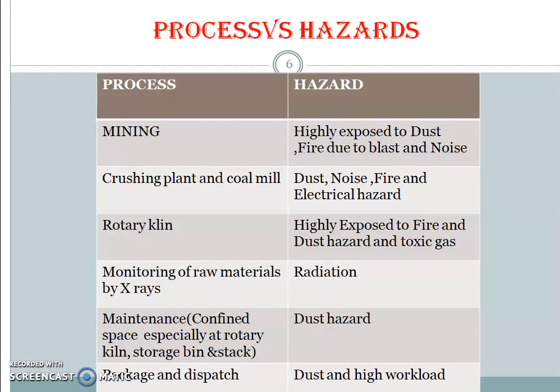Process versus hazards: Mining — highly exposed to dust, fire due to blasting, and noise. Crushing plant and coal mill — dust, noise, fire, and electrical hazards. Rotary kiln — highly exposed to fire, dust, and toxic gas. Monitoring of raw materials by X-rays — radiation hazard. Maintenance — confined space hazards especially at rotary kiln, storage bin, and stack; dust. Packaging and dispatch — dust and ergonomic workload.